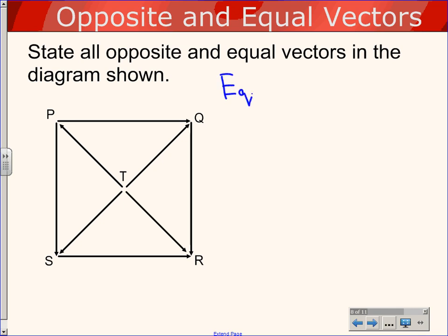Let's do the equal vectors first. If you take a look at just the horizontal lines, vector PQ is exactly the same as vector SR. They're exactly the same vector. And then if we look at our vertical lines, they're both pointing downwards. Vector PS is exactly the same as vector QR. Those would be equal vectors.